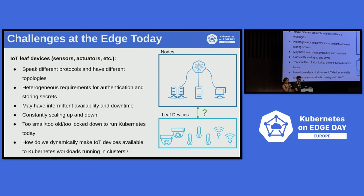I'm going to summarize specifically IoT leaf devices, which includes actuators, sensors, and MCU class devices. These usually speak different protocols and all have different topologies. They also have heterogeneous requirements for authentication and storing secrets. They may have intermittent availability and downtime, and these are constantly scaling up and down. Most importantly, they're usually too small, too old, or too locked down to run Kubernetes on themselves today. So how can we dynamically make these IoT leaf devices available to Kubernetes workloads running in Edge clusters?